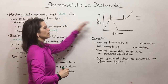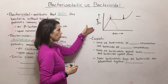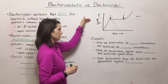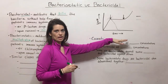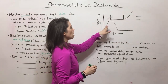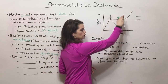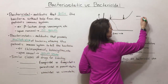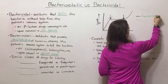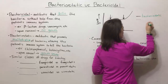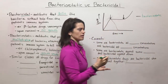Let's take a look at this graph for an example. On the y-axis we have the number of cells on a logarithmic scale. On the x-axis we have time. The dark solid line represents a bacteriostatic drug, whereas the dashed line represents a bactericidal drug.